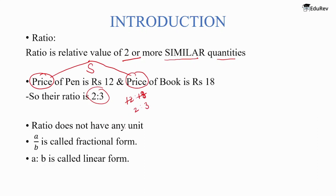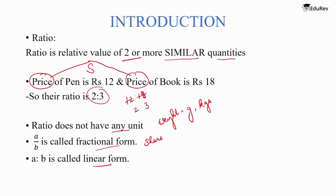Ratio does not have any unit. When we talk about weight, we give it a unit like grams or kilograms, but ratio does not have any unit. A over B is called the fractional form, and A is to B is called the linear form. We write A over B in fractional form when we have to calculate the share of a given commodity, whereas we use the linear form when we have to compare one thing with the other.